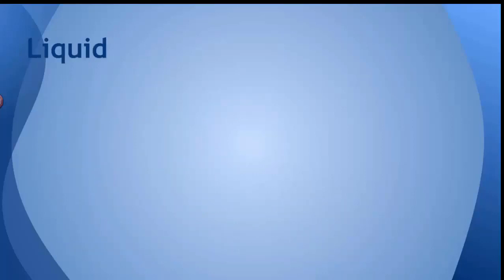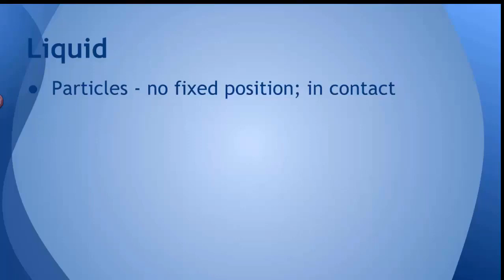Liquids. Well, in liquids, the particles don't have a fixed position. They are still in contact with one another. They're close enough to touch each other. But they're not stuck in any one particular place. Well, that means that a liquid doesn't have a definite shape. It'll take the shape of whatever container you put it in. But it does have a definite volume because the particles are still touching each other.